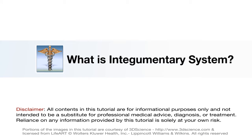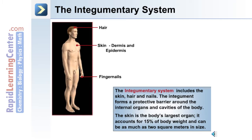Let's begin this tutorial with an overview of the integumentary system. The integumentary system includes the hair, the skin, and fingernails as well as toenails. The integument forms a protective barrier around the internal organs and the cavities of the body. The skin is the largest organ and the major portion of the integumentary system.